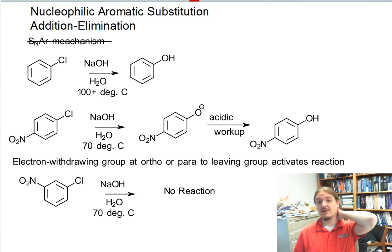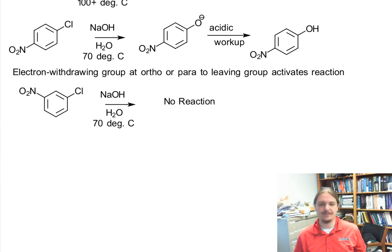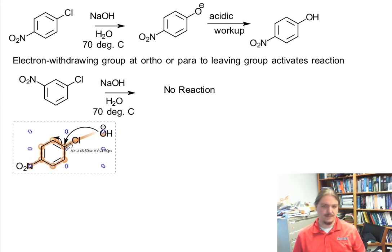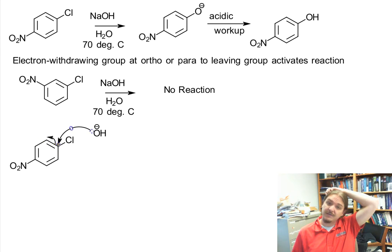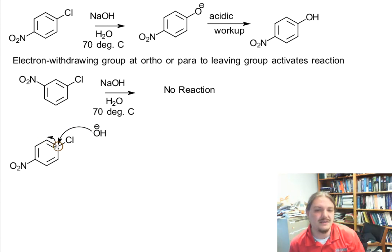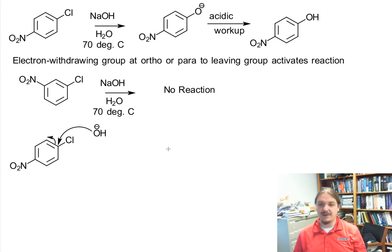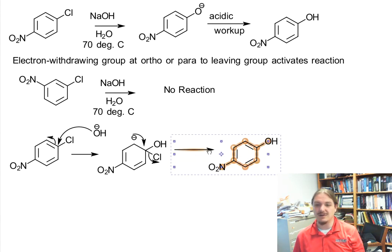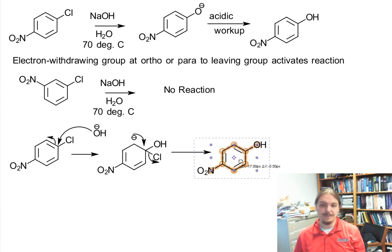So what is going on in this particular case? Let's share the mechanism of that top reaction. The first step is nucleophilic attack of the hydroxide at the spot where the leaving group is — unlike other nucleophilic substitution reactions. Nucleophilic attack happens first; loss of leaving group is a later step. This forms a carbanionic intermediate that some people will call a Meisenheimer complex. I'm just going to call it a carbanion, and then that carbanion undergoes loss of leaving group to reform the aromatic ring.